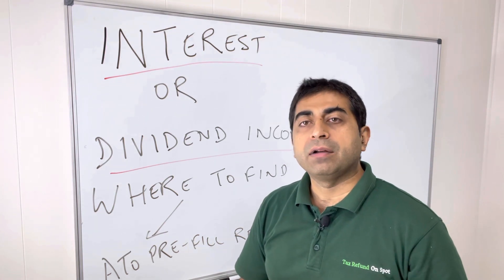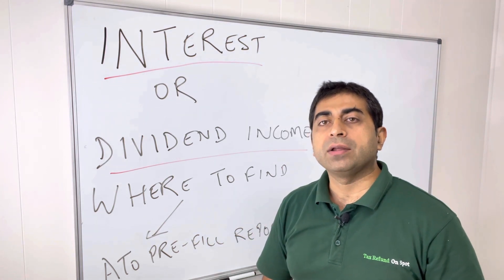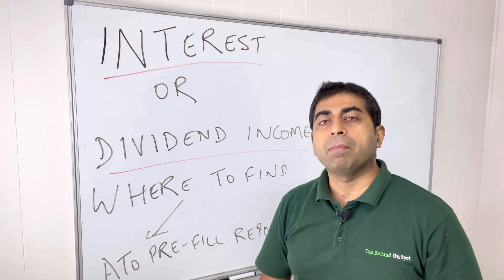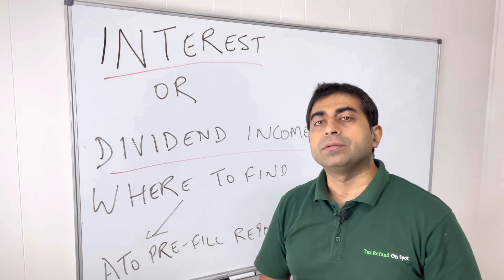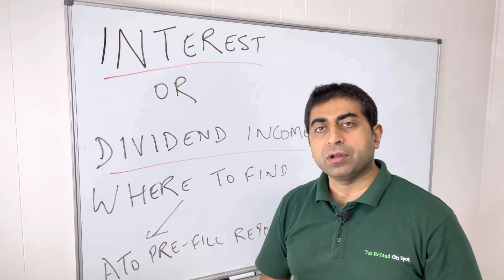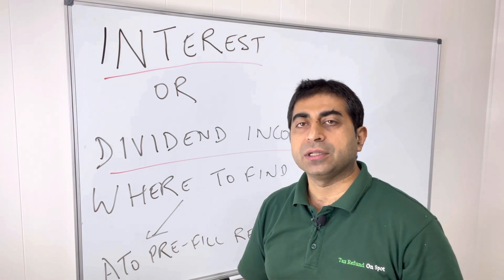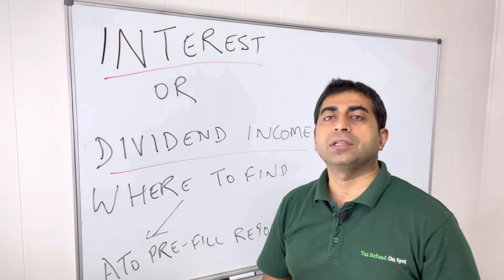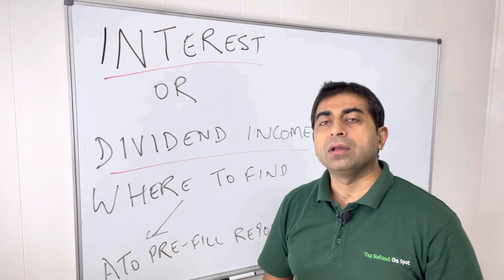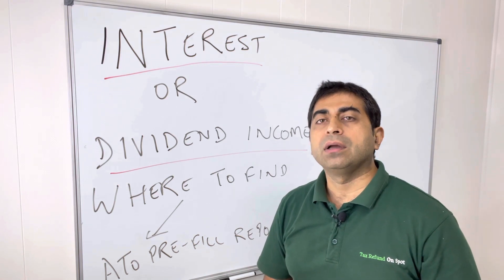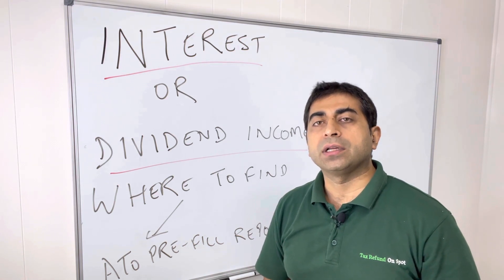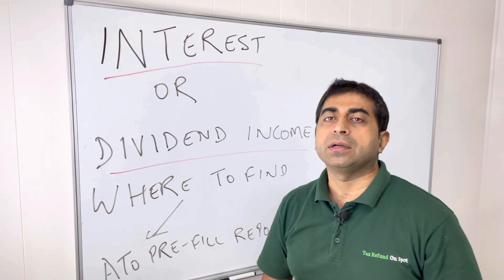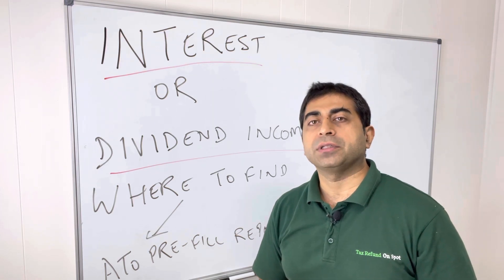However, the information will only appear in the report if you have provided your Tax File Number to the bank or to the company where you have invested. My suggestion is: when the bank asks for your Tax File Number, just provide it, so that at the end of the year your interest income automatically comes into your tax return. Thanks for watching.